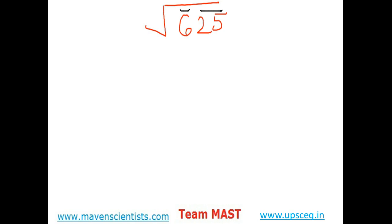Now guess any number whose square is less than or equal to the first pair number. One squared is one, which is less than six, but you have to keep in mind that the number should be closest to six. Two squared is four, which is more closer to six compared to one, so we select the number two whose square is four, which is less than six. Now subtract it from the six.